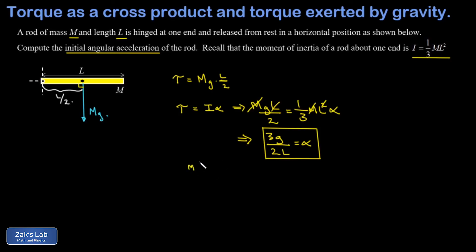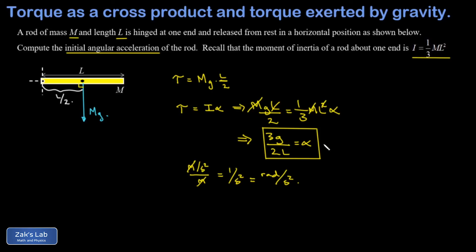The last thing to do is check units. g has units of meters per second squared, l has units of meters, giving overall units of one over second squared. Since radians are unitless we can insert them in the numerator, yielding radians per second squared — the correct units for angular acceleration.